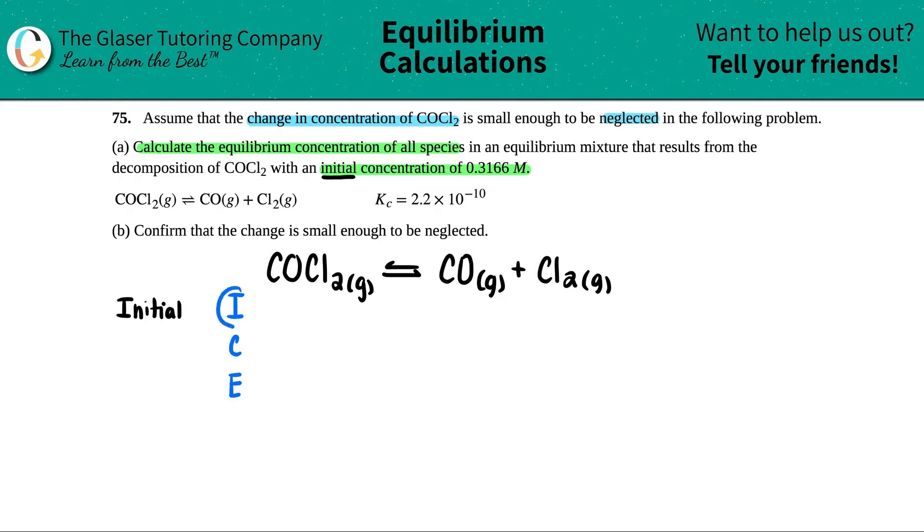They told us that initially, we started with 0.3166 molarity of the COCl2. That's this one over here, so I'm just going to put 0.3166. You could put the M if you want, but usually in my ICE table, I don't like to write the units. I just make sure that it's in molarity before I put it in. Now let's figure out the initial concentrations of the products. What numbers are we going to use for CO and Cl2? Well, did they say that we started off with any of this? No. They just said that we were decomposing COCl2 and that was the only thing that had an initial concentration. So we didn't start with these. So 0 and 0.